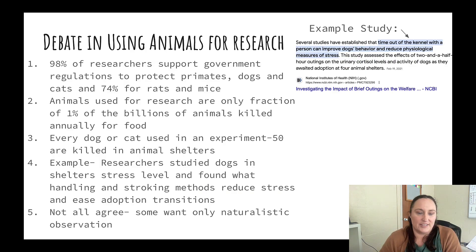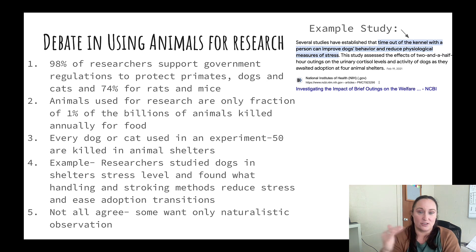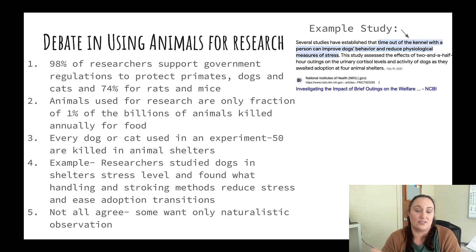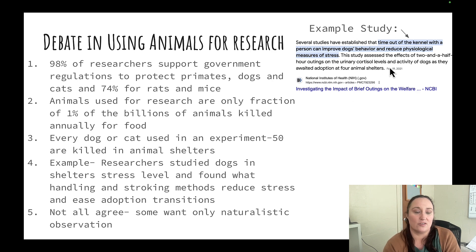One example of research benefiting animals is researchers studying dogs in shelters, looking at their stress levels and finding that a certain stroking technique reduces their stress — which actually helps them get adopted more easily because their behavior looks calmer. Another study on the same topic looked at outings and their effect on dogs' cortisol levels.